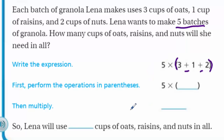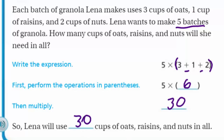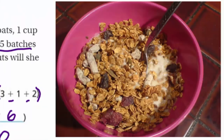Perform the operations in the parentheses first: 3 plus 1 plus 2 equals 6. So now we have 5 times 6. Multiply — 30! So Lena will use 30 cups of oats, raisins, and nuts in all. And that almost looks like what we have in our bowl right there.